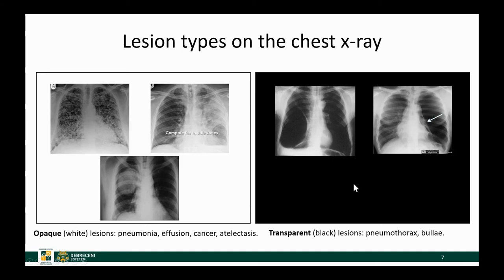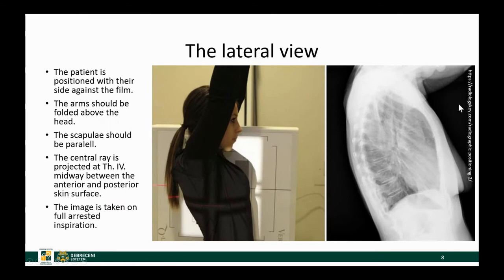That leaves us with basically two types of lesions on chest x-rays. We have the opaque or white lesions — these would be metastases, pneumonias, cancers, atelectasis, etc. Then we have the transparent lesions, which are, for example, bullae, pneumothoraces, or other cystic diseases appearing on the chest x-ray.